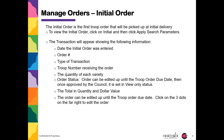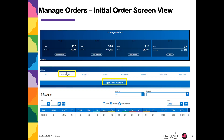Once the order is approved by the Council, it will be available in view-only status. It will also give you a total in quantity and dollar value. From the Manage Orders screen, click Initial Order and Apply Search Parameters to view it.